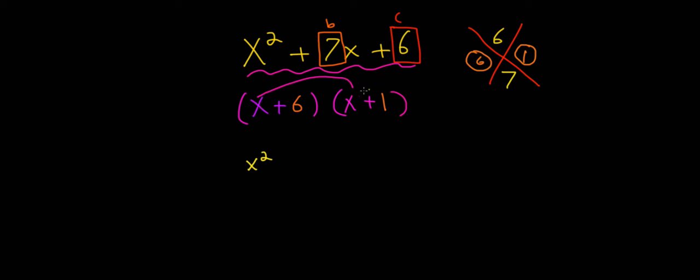And then we have 6 times x, which is 6x. And then our last term is 6 times 1, which is 6. And as we simplify this, that turns into 7x. As we simplify it and rewrite the whole thing, we notice that it is the same exact expression.